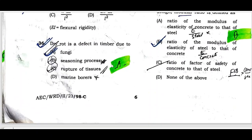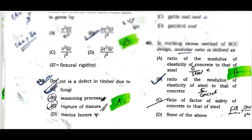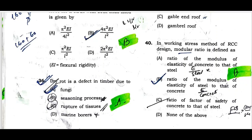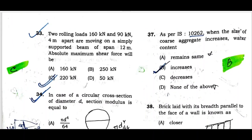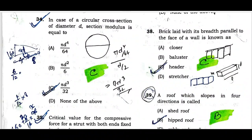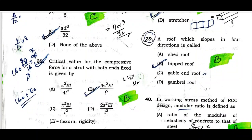Question number thirty-six: Dry rot defect in timber is caused by fungi. Option A is the correct one. Question number thirty-seven: According to IS code, when the size of the coarse aggregate increases, water content increases. Question number thirty-eight: A brick laid with its breadth parallel to the face of a wall is known as a header. Option C is the correct one.